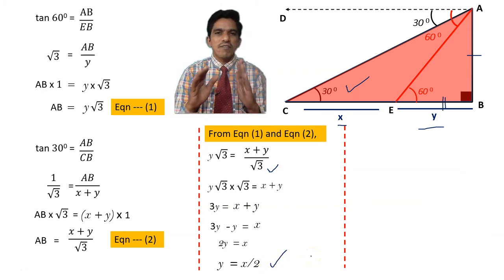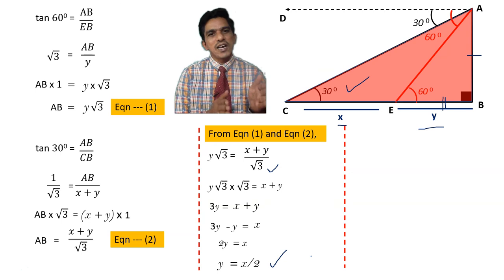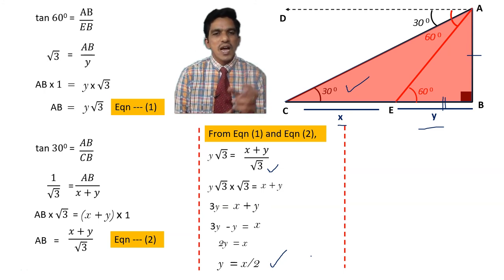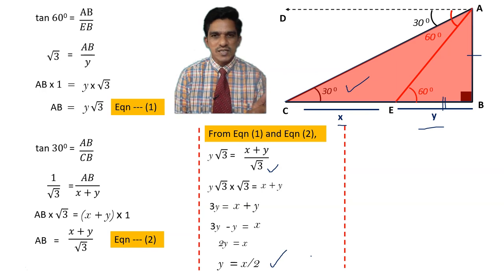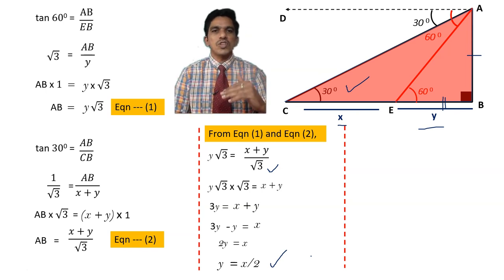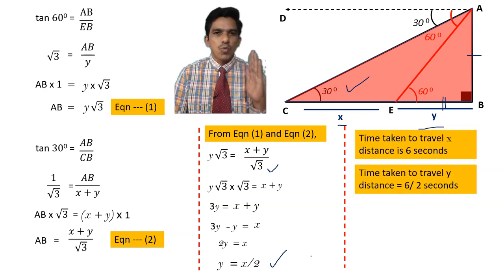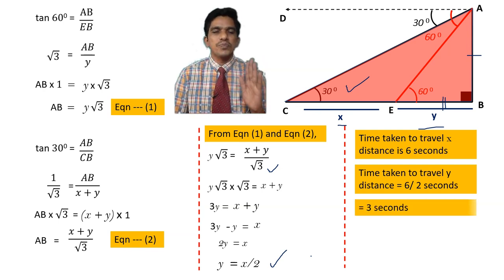Y equals X over 2 means the remaining distance EB is half the distance CE that the car already travelled in 6 seconds. Since the car travels at uniform speed, distance and time are in direct proportion. When the distance is halved, the time is also halved. So the time taken to travel distance Y is 6 divided by 2 equals 3 seconds.